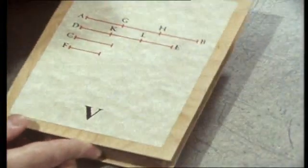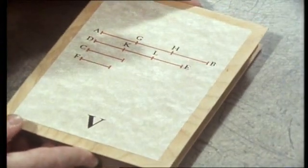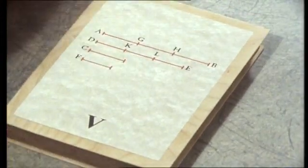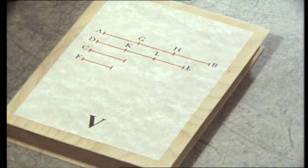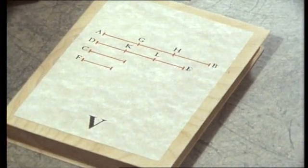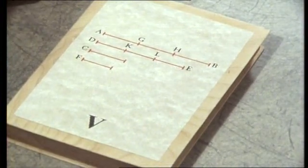Book 5 parallels much of what we found in Book 7. Only instead of being confined to whole numbers, it deals with ratios of magnitudes — that is, of lengths and of areas. And many of the results in Book 7 appear here also, but in a different guise.